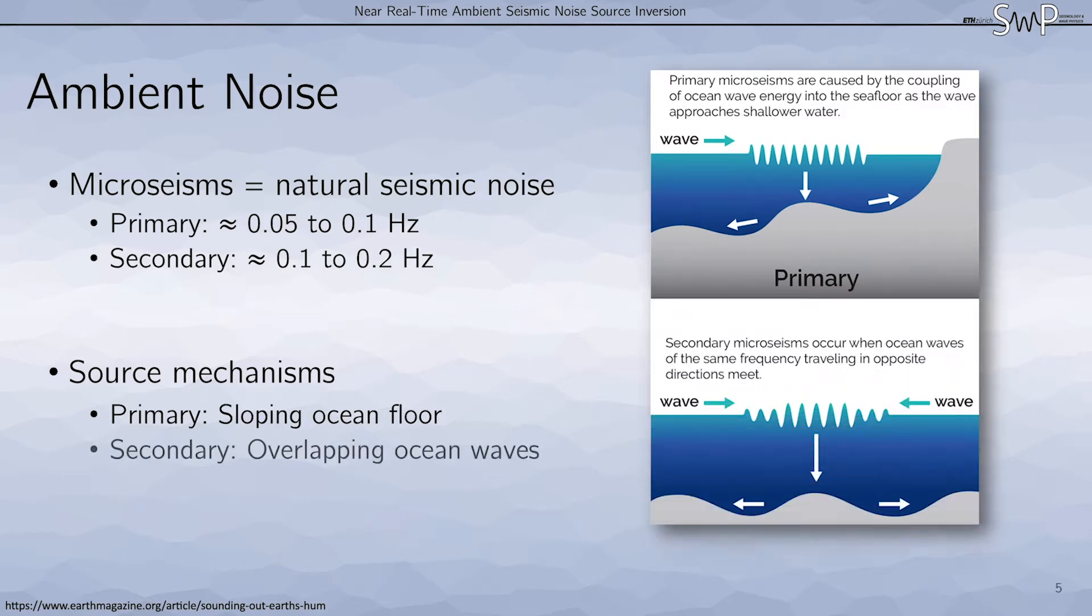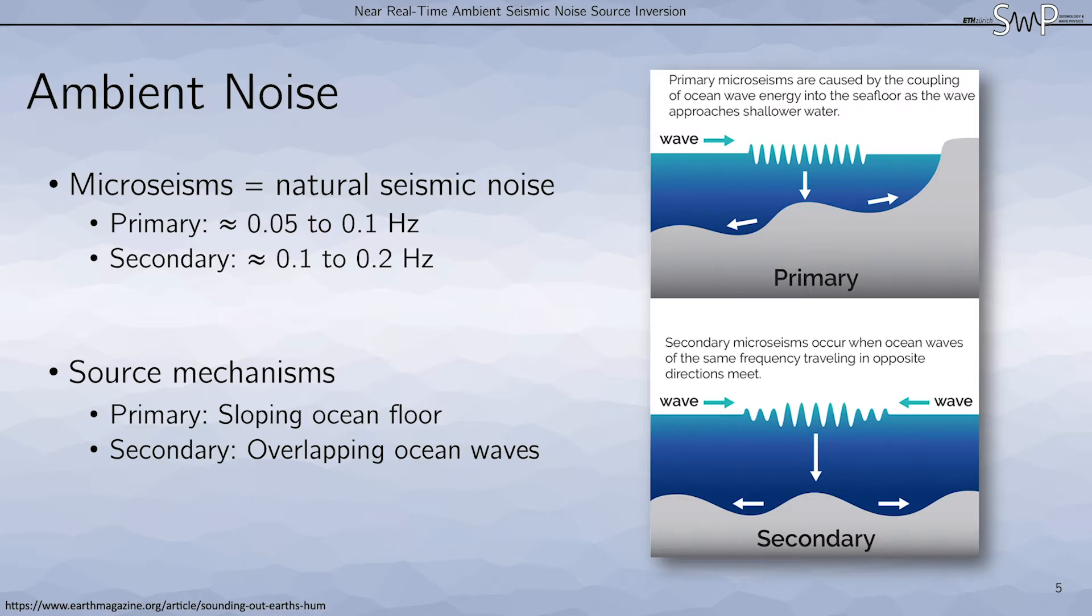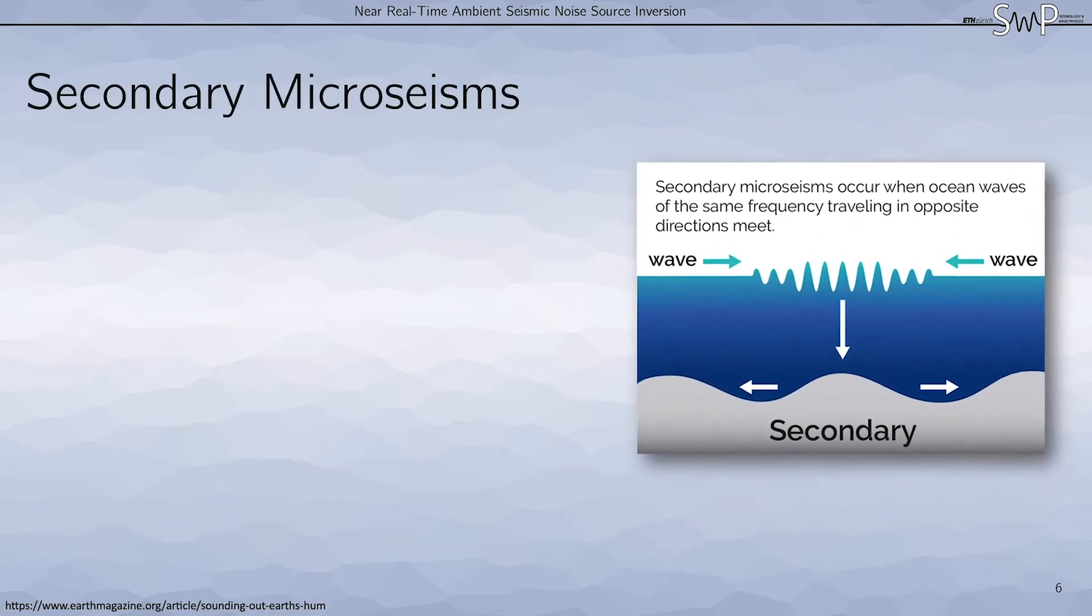Secondary microseisms, on the other hand, occur when ocean waves of the same frequency traveling in opposite directions meet. These then overlap and create a pressure wave that goes down to the ocean floor, creating a seismic wave. In our research, we focus on secondary microseisms.